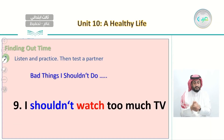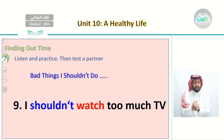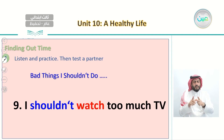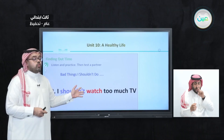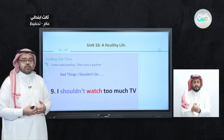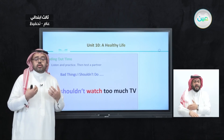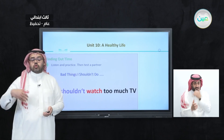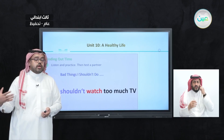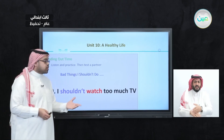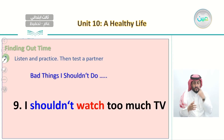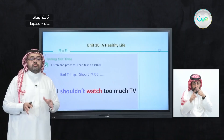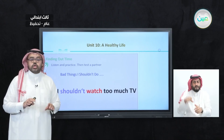Number nine, the third bad thing we shouldn't do: I shouldn't watch too much TV. If we watch too much TV, this will make us lazy and unwilling to exercise, do homework, go for a walk, or do other useful activities. Watching too much TV is one of the bad things we should not do.